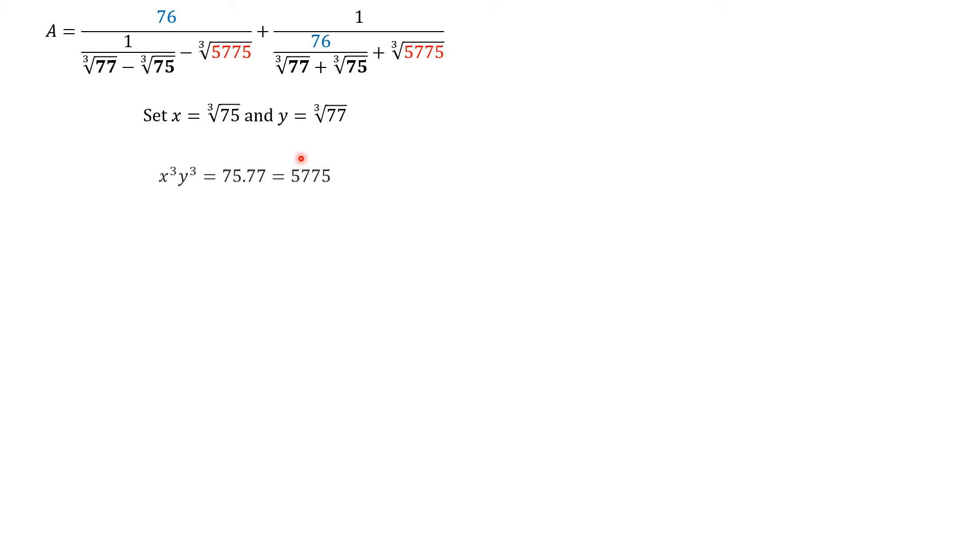We notice that 5775 is the multiplication of 75 and 77. Using X and Y, we see that 5775 is the multiplication of X cube and Y cube. Again, we notice that 76 is 77 plus 75 divided by 2. So, replacing again, we see that 76 is X cube plus Y cube divided by 2.